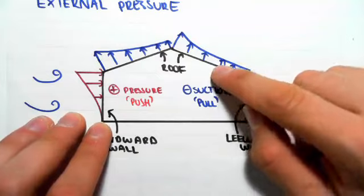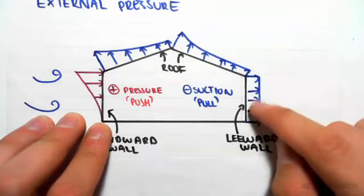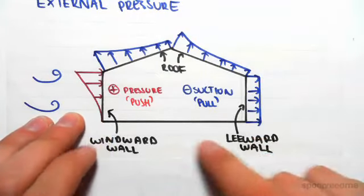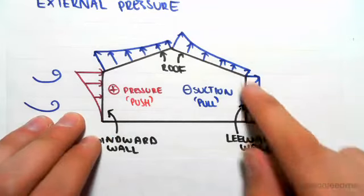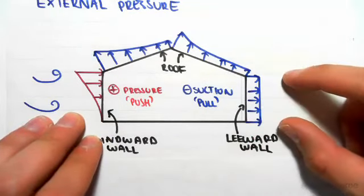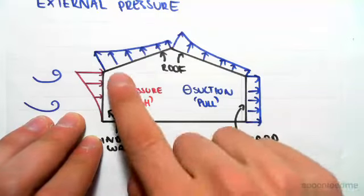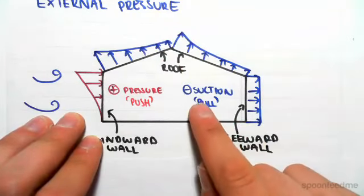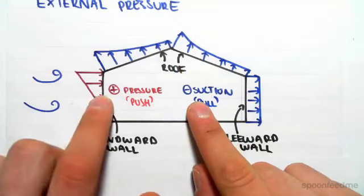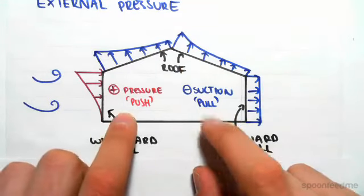Same on this side of the roof, it's going to try to pull up. And on the leeward wall here, the leeward wall is the opposite to the windward wall, so it's where the wind exits. It's also going to try to pull that wall out from the building. So everywhere is in suction, and we call that negative, and the positive we call pressure, and that's a push.